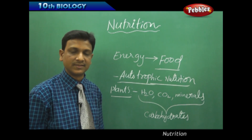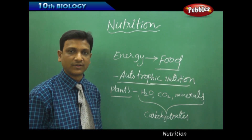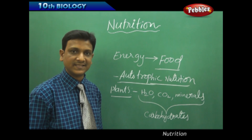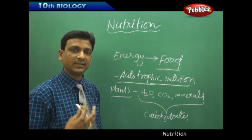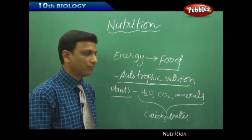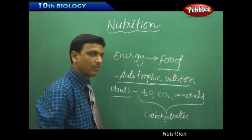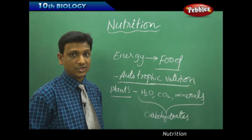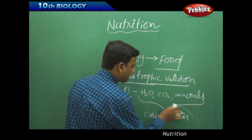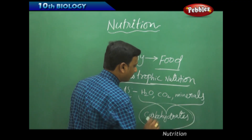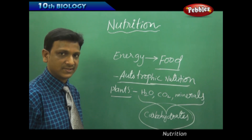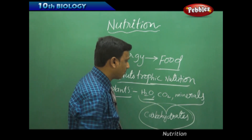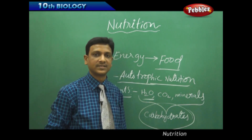Different organisms, including us, are dependent on plants for our food. Why do we eat rice? Why do we eat bread, rotis, chapatis? That is because all these contain food molecules like carbohydrates, which give us energy. These complex molecules are produced by plants using simple substances like water, carbon dioxide, and minerals.